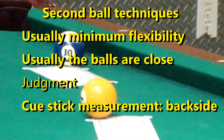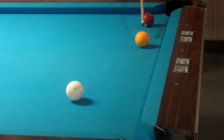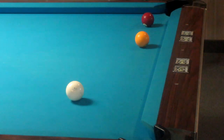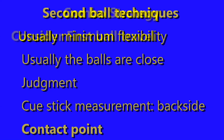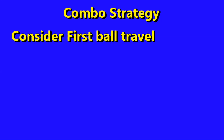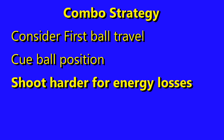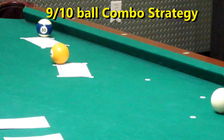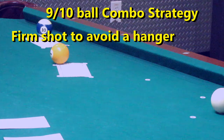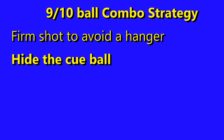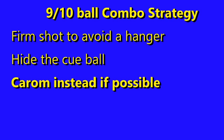Cue stick measurement from the back side avoids ball interference. Consider where the first ball will travel — you don't want it to interfere with your next shot. Always consider cue ball position. Depending on the cut angles, remember to shoot harder because of the energy lost to intermediate balls. If shooting a combo for the game ball, such as in 9-ball or 10-ball, usually shoot firmly so that a miss doesn't leave a hanger for your opponent. Or try to hide the cue ball, or consider caroming the cue ball into the game ball instead, which will more likely separate the game ball from the ball that must be hit first — an advantage if you miss.